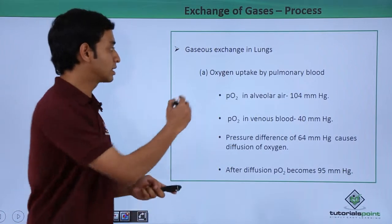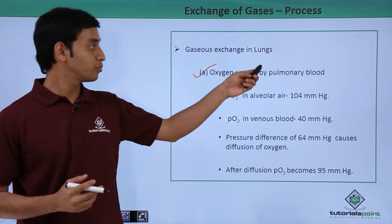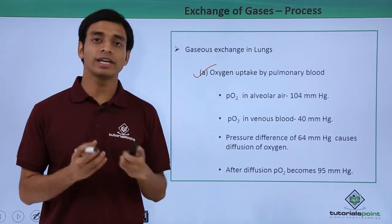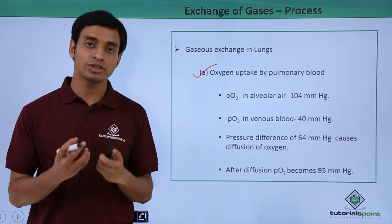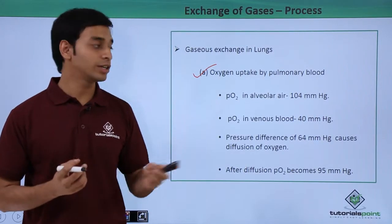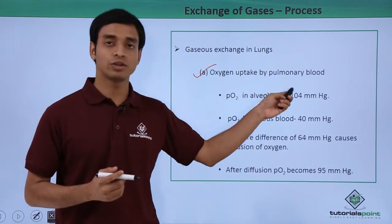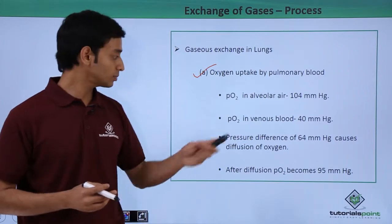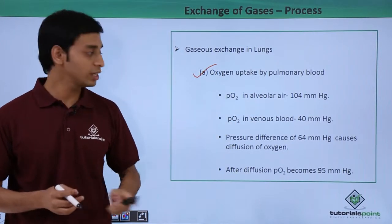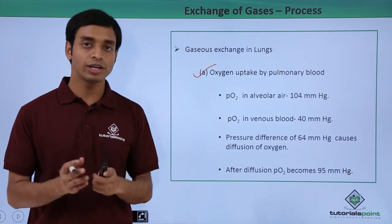We'll start the discussion with the oxygen uptake happening in the pulmonary blood from the alveolar air — the air rushing through the nostrils into the alveoli. Here, the partial pressure of oxygen is about 104 mmHg, whereas in the venous blood the partial pressure of oxygen is about 40 mmHg.